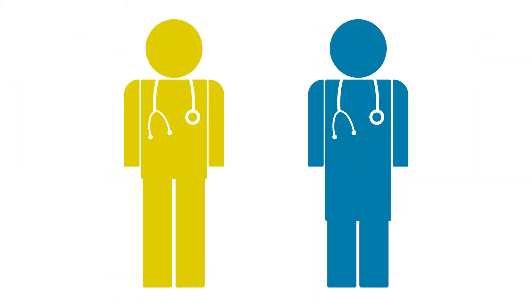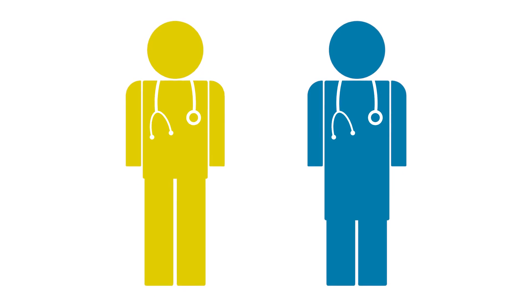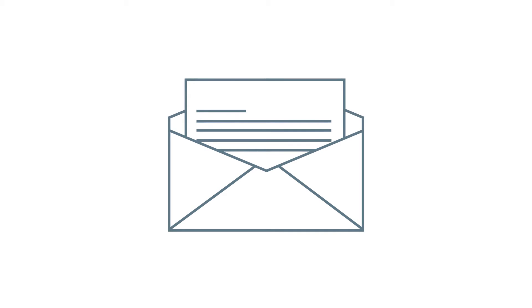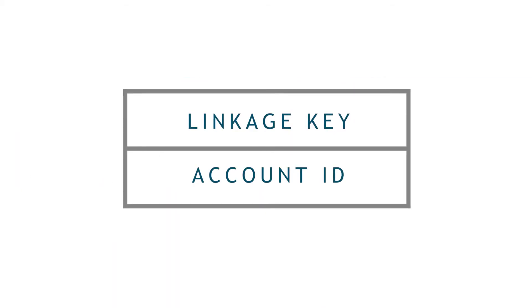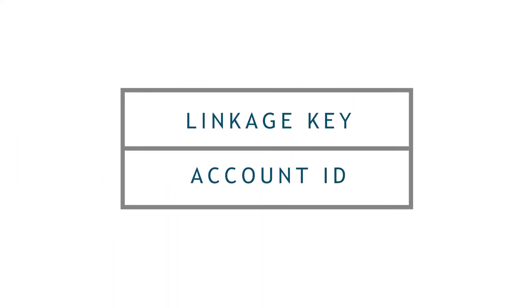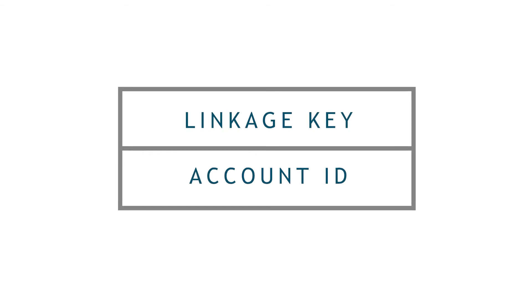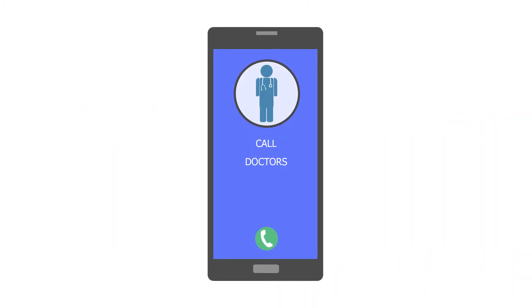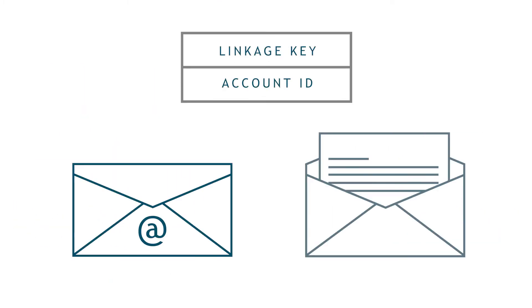You will need an email account in order to register with Patient Access. If you have a GP, it will help to contact them first and say that you are registering with Patient Access and would like a registration letter. Alternatively, you can ask them for a linkage key and account ID — this is the information contained in the letter. You can request this in person or by phoning the practice receptionist. They will have to give you your linkage key and account ID in writing, either by email or as a letter.